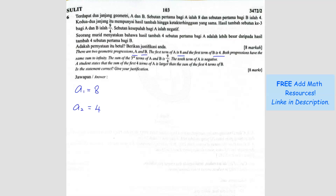Both progressions have the same sum to infinity, so the sum of infinity for the first progression equals the sum of infinity of the second progression. Also, the sum of the third term of A and B is 9/4, meaning the third term of A plus the third term of B equals 9/4.